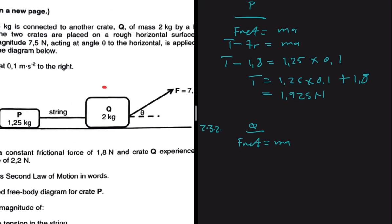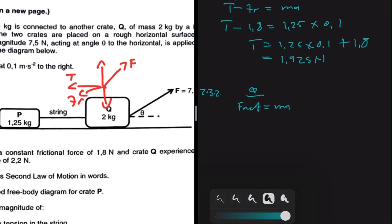For crate Q we're going to need a free body diagram first. We have the force acting at an angle, the normal force, Fg, tension acting, and the frictional force. On the horizontal axis, we're going to resolve F along the horizontal. On a flat surface we see F cos theta.